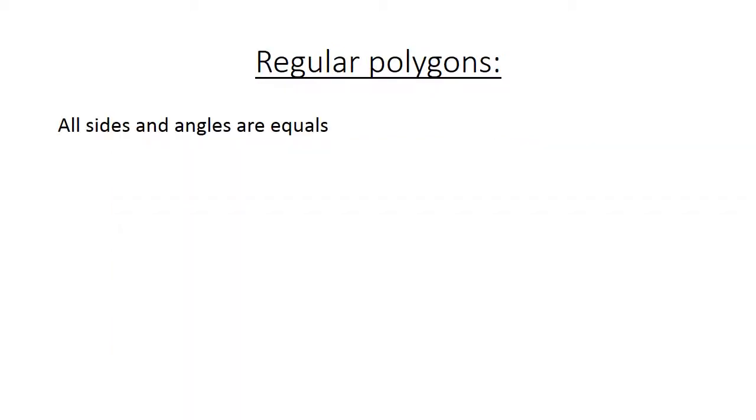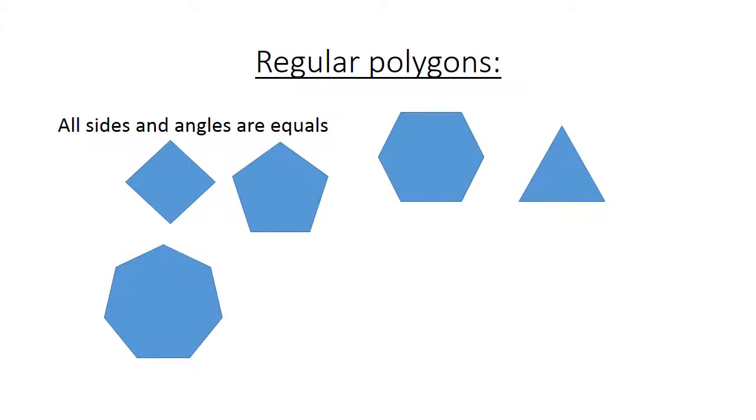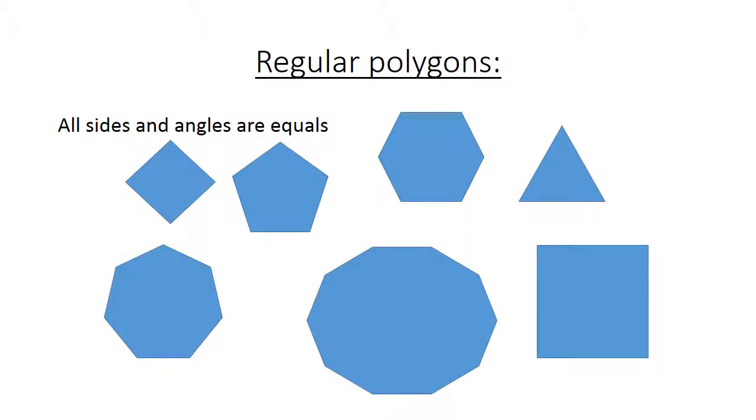Regular polygons: All sides and angles are equal. Here we have examples including a pentagon, a hexagon, a triangle, an octagon with eight angles, and a square.